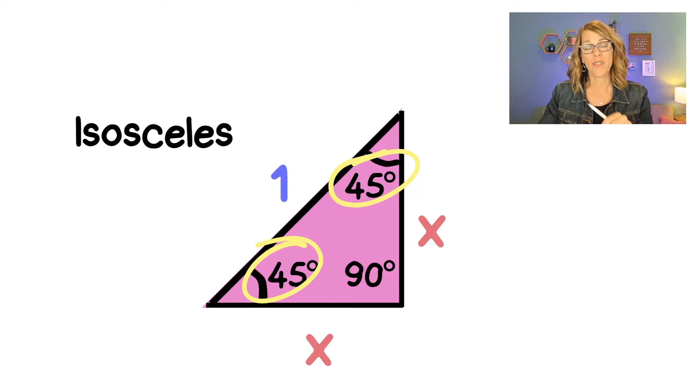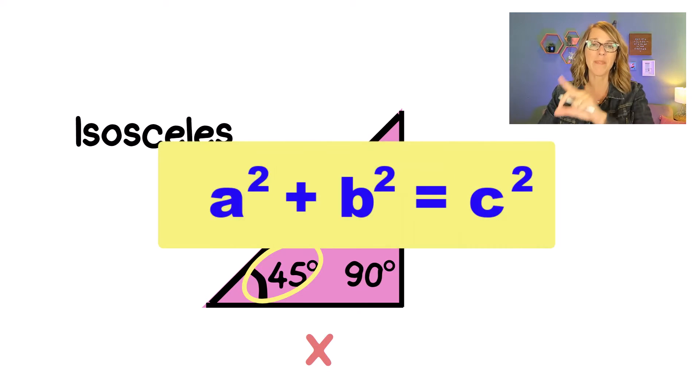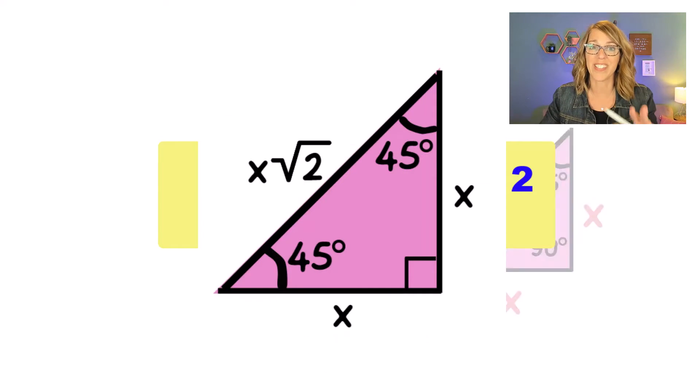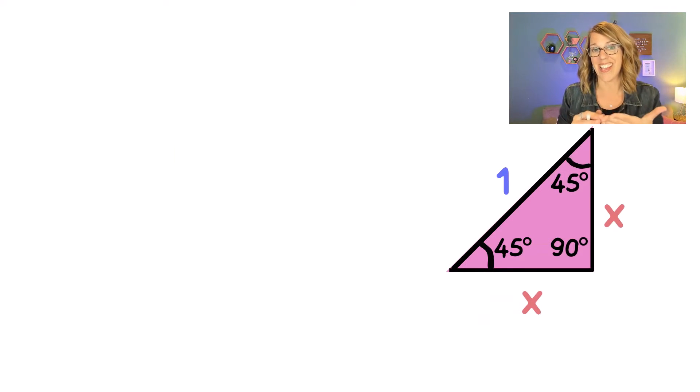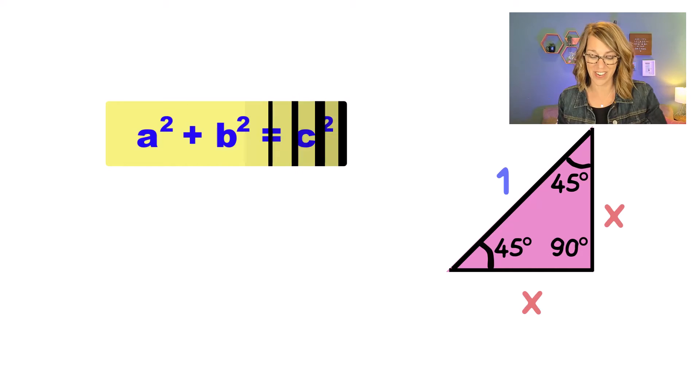I'm going to show you two different ways to solve this. One uses the Pythagorean theorem and the other one is going to use a formula so you will always get these right. Since I've got X and X and 1, I can set up the Pythagorean theorem.